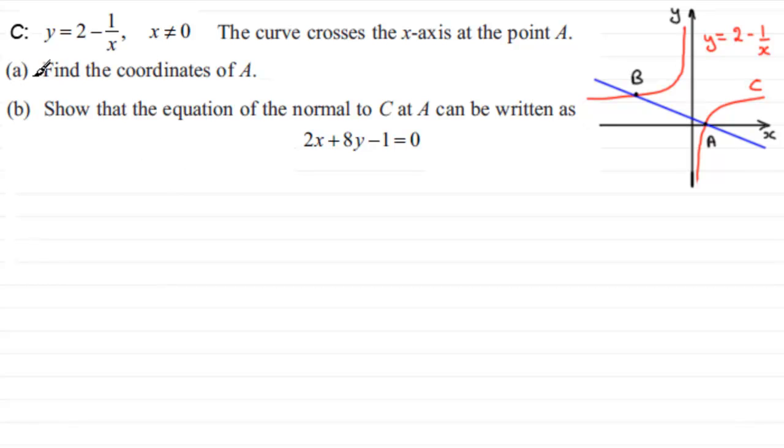Okay, well, in the first part, how do we find the coordinates of this point A? Well, very simply, it's clearly the point where y is 0. So, we can say at A, y equals 0. And so, therefore,